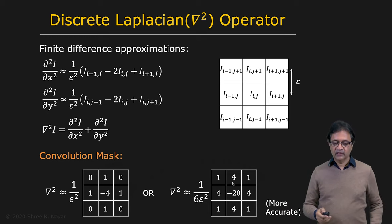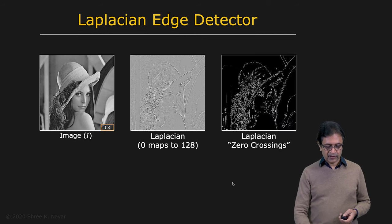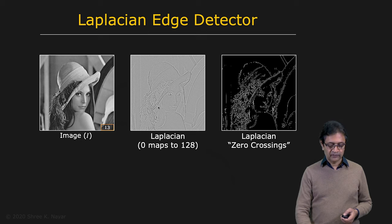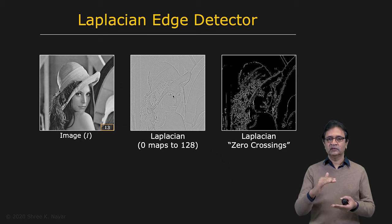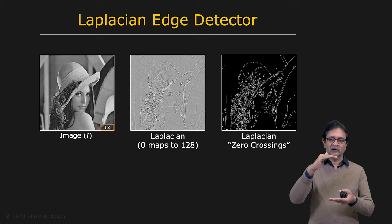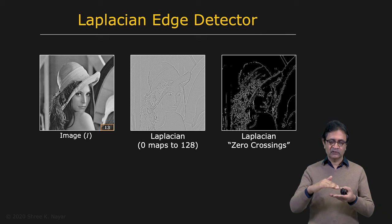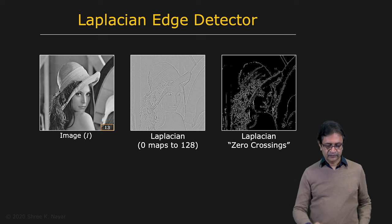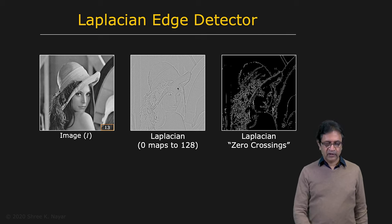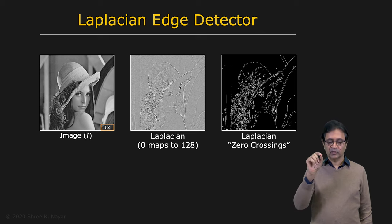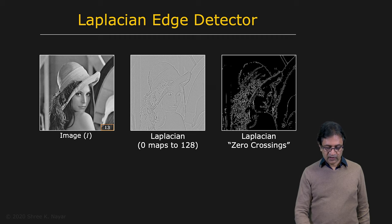Now let's look at how this works with an image. Here is the Lenna image, and this is the output of the Laplacian operator. Note that an image cannot display negative values, so we've made 128 equal to 0 in this 8-bit image — values darker than 128 are negative and values brighter than 128 are positive in terms of the Laplacian output. Wherever there is a zero crossing, the value will be 128. Those zero crossings have been detected to produce the final edge map.